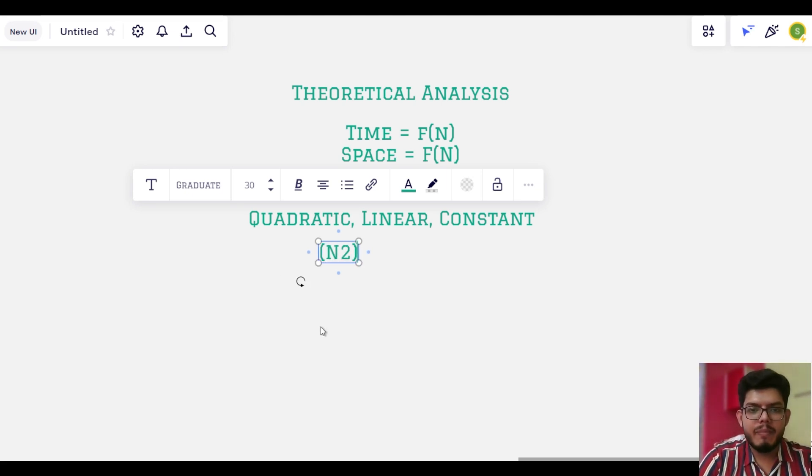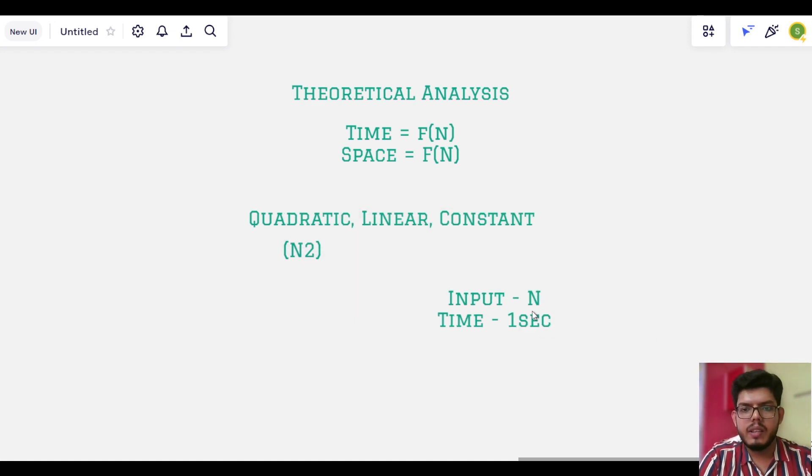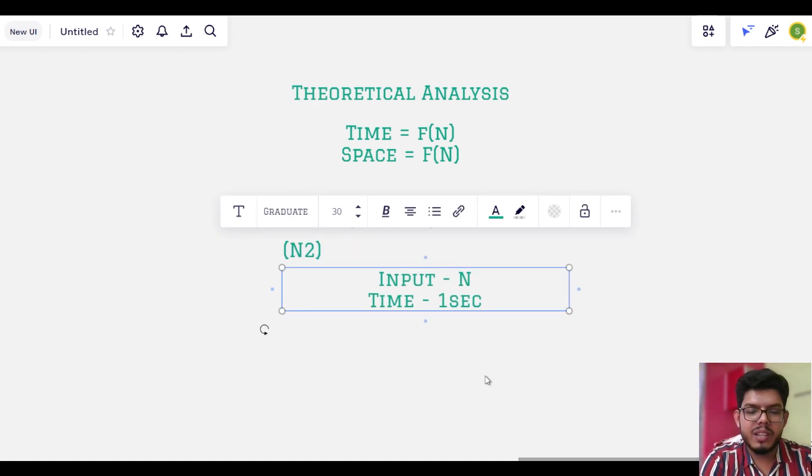So my quadratic function is proportional to n squared. So what do I mean by this? Suppose the input size is n and it takes one second to execute. Now if the input changes to 10 times n, then this time will change by a factor of 100 that is n squared. n is 10 here.